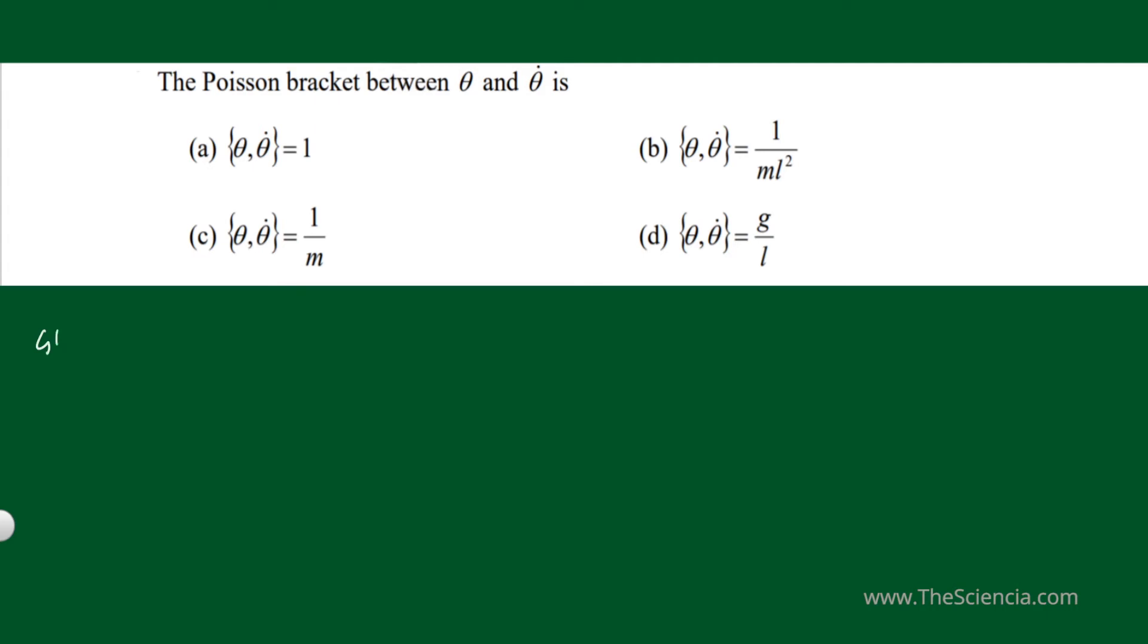This is a previous GATE question. The Poisson bracket between theta and theta dot is... How can we solve this problem?